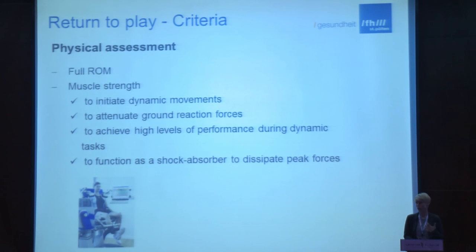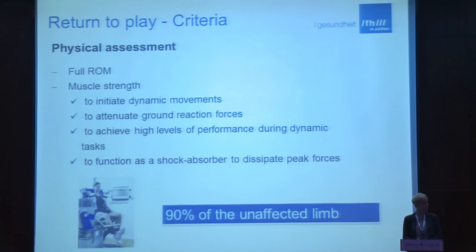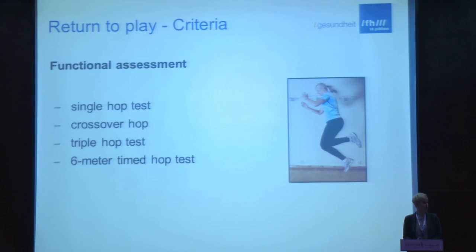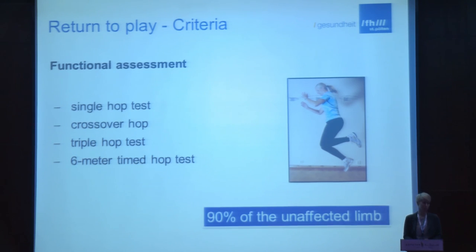Physical assessment is very important — we have learned a lot from ACL in this case. There should be full range of motion and good muscle strength. During isokinetic testing, which is a proper method to assess muscle strength, it should be at least 90% of the unaffected limb before the patient can return to sport. For functional assessment, hop tests are a perfect tool to assess the functional condition of the patient — four different tests are suggested — and again 90% of the unaffected limb is the threshold for safe return to sport.